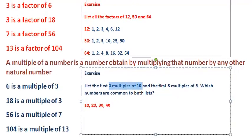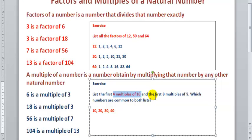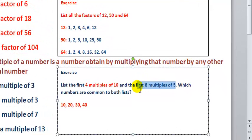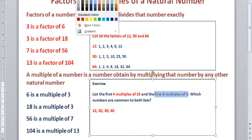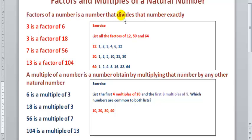Now let's list the first 8 multiples of 5. The first 8 multiples of 5 are: 5, 10, 15, 20, 25, 30, 35, and 40. And 40 is the last of the first 8 multiples of 5.